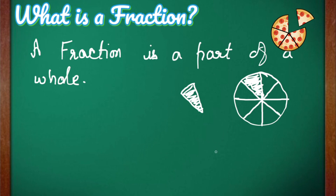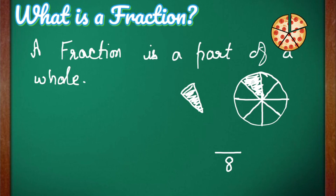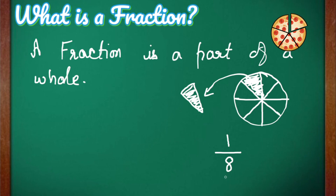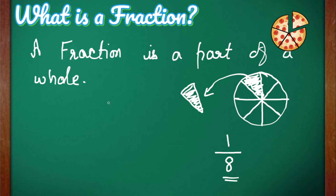The total number of parts is written in the denominator — the number written under the line — which is 8. The number written above the line is called the numerator, which is the piece of pizza we have eaten. So it is written as 1 by 8, or it can also be read as 1 out of 8 pieces.